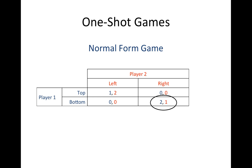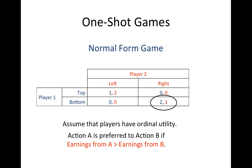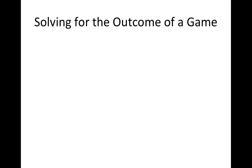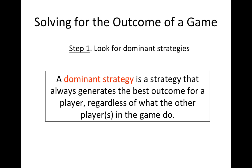And if player 1 plays bottom and player 2 plays right, then player 1 earns 2 and player 2 earns 1. When considering how a player will rank order outcomes from different actions, we assume that players have ordinal utility. This means that some action A will be preferred to some other action B if the earnings from action A are greater than the earnings from action B. Now that we know how to represent a game in normal form, we can start to consider how to solve a game. The first step in solving any game is to look for dominant strategies. A dominant strategy is a strategy that always generates the best possible outcome for a player regardless of what the other players in the game do.